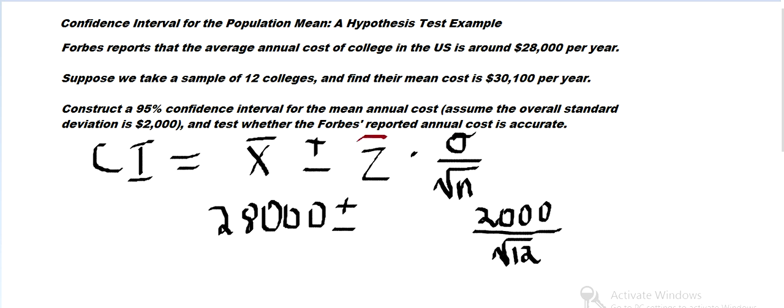And we can do that using three ways to find the Z value. So we need the Z value for 95% CI.